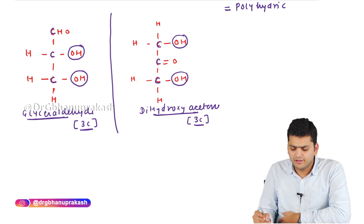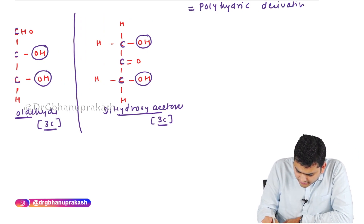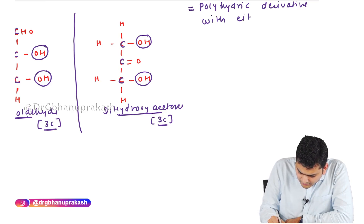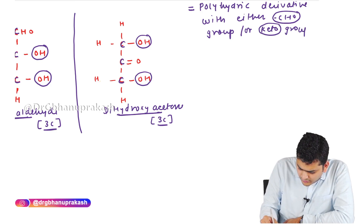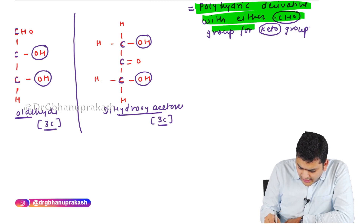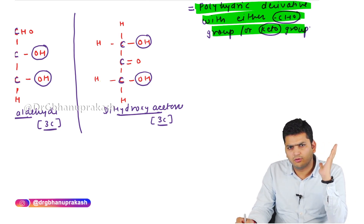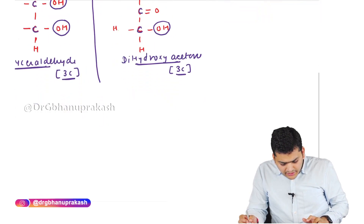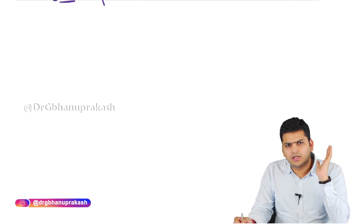Carbohydrate is basically a polyhydric derivative — with either the aldehyde group or the keto group (C=O). So the definition is: carbohydrate is a polyhydric alcohol with either an aldehyde or keto functional group. More than one alcohol is present, combined with either aldehyde or keto.